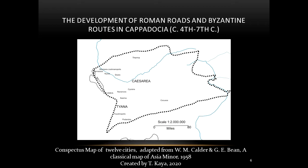Cappadocia was divided into two provinces in the 4th century as Cappadocia Prima and Cappadocia Secunda, making Caesarea and Tayana the capitals of the two regions respectively. Hierocles mentions twelve cities in the region. The cities established along the pilgrim's routes, such as Tayana and Faustinopolis, gained prominence in this regard.